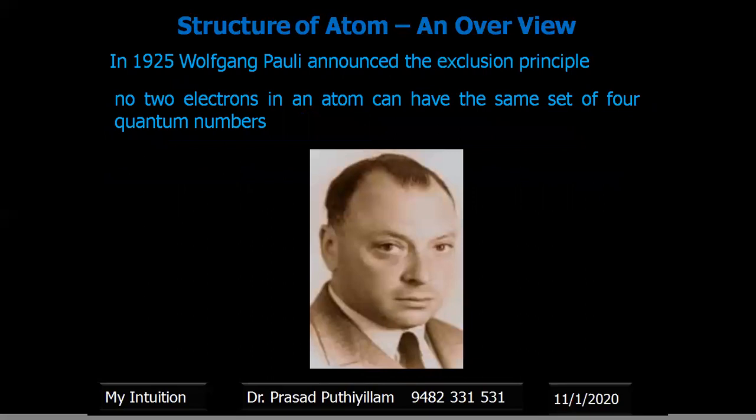In 1925, Wolfgang Pauli announced the exclusion principle — the famous Pauli's exclusion principle — which states that no two electrons in an atom can have the same set of four quantum numbers.